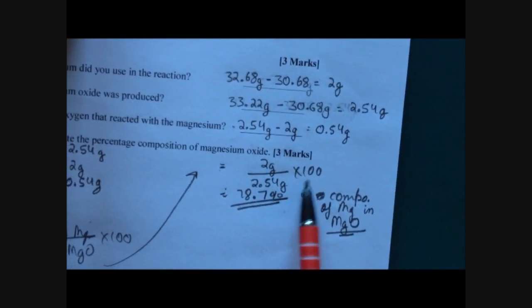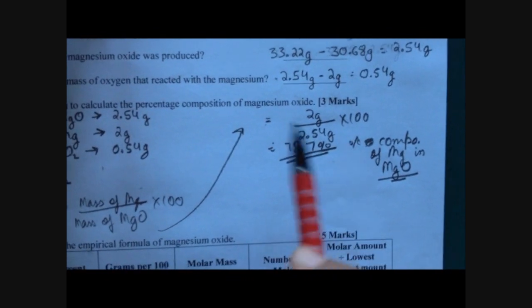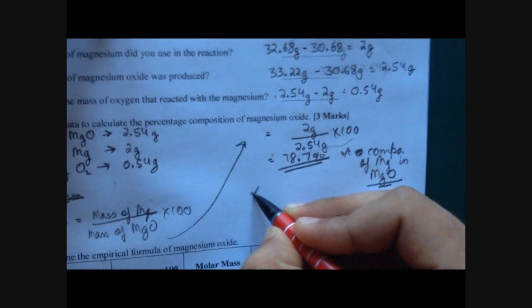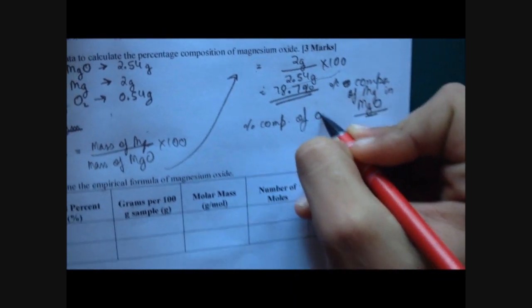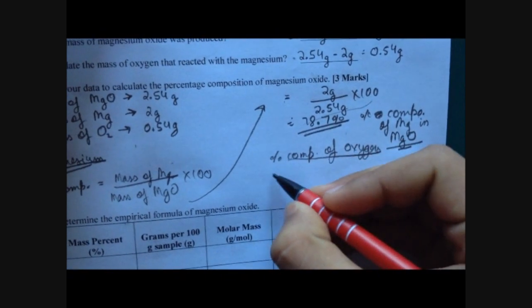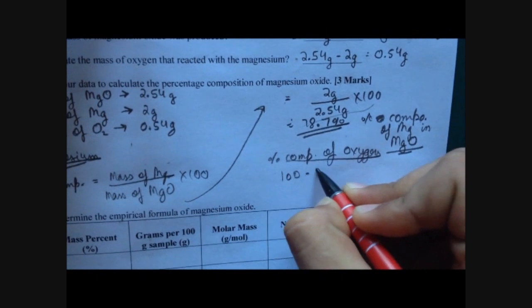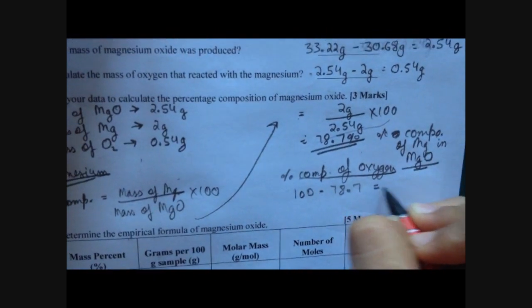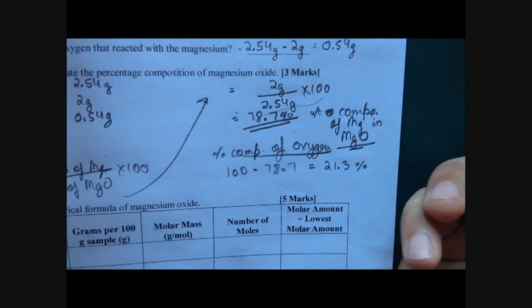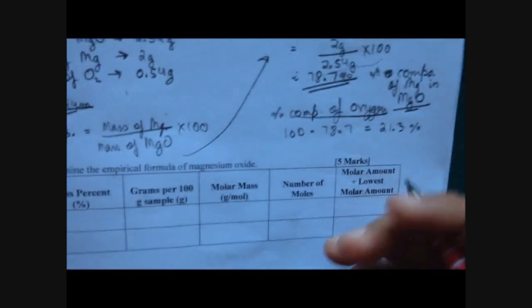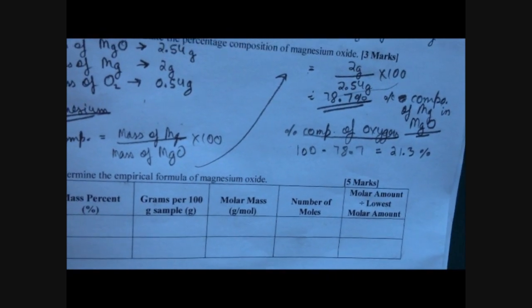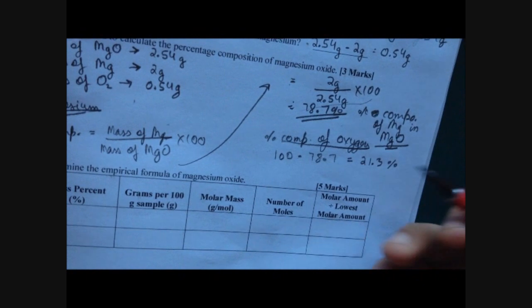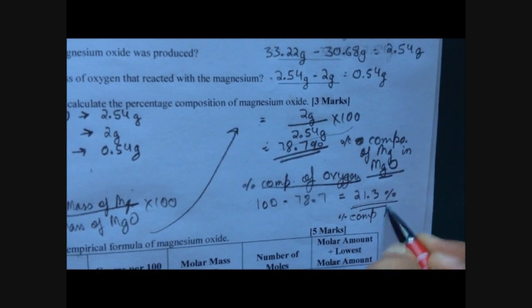To calculate the percent composition of oxygen, subtract 78.7 from 100, which gives you 21.3 percent. We subtract from 100 because the total must equal 100% — you cannot have more than 100 percent. Since there are no other elements in our compound, 21.3% is the percent composition of oxygen.